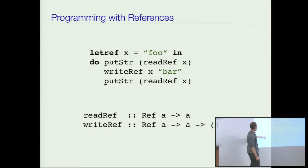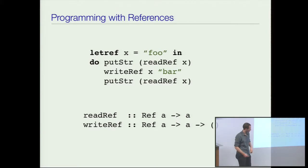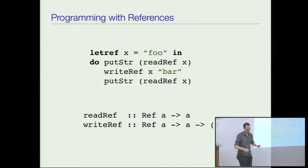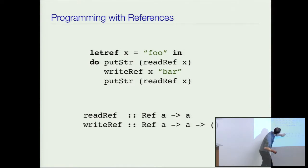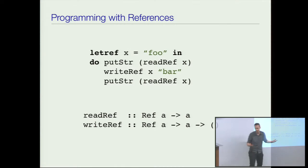Read ref and write ref can have these types. In DDC proper you can update arbitrary algebraic types, but just for the talk we'll say that mutable references always have type ref.